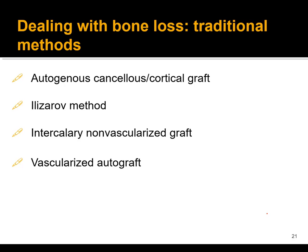When you have a bone defect, there are a few options. One — not mentioned here — would be shortening, and that can be done to a certain degree except there are limitations with regard to affecting the function of the patient by shortening an extremity, certainly in the lower extremities — a little bit of a bigger problem than in the humerus, for example.